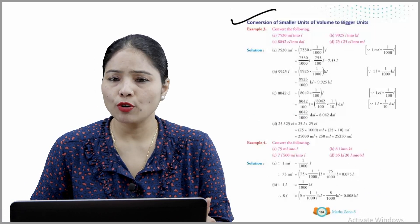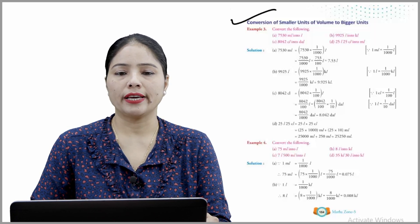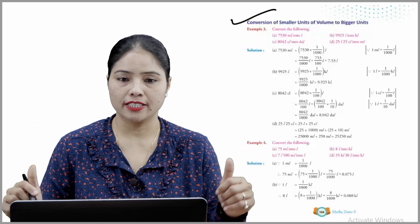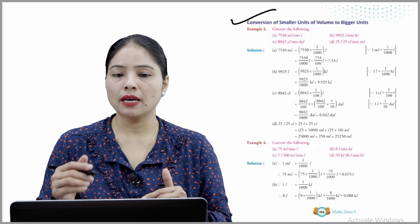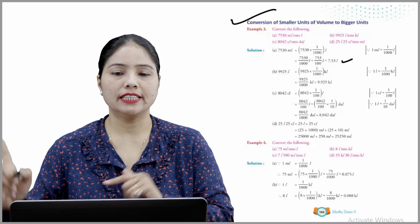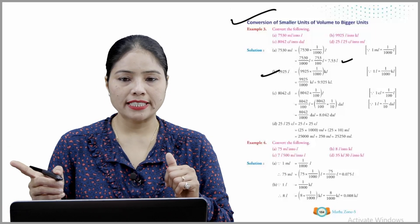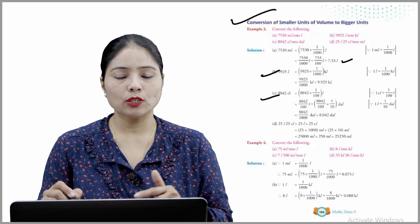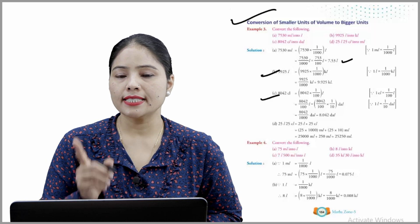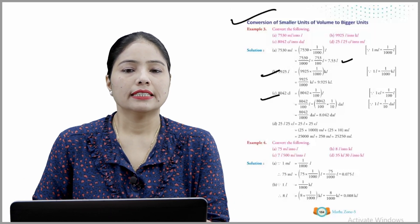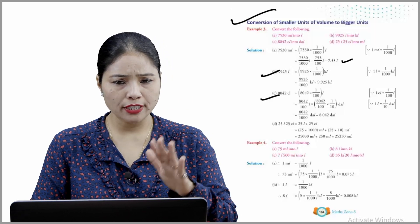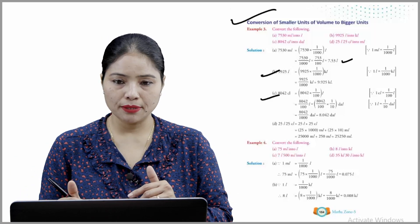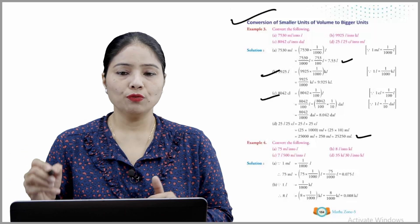Conversion of smaller units of volume to bigger units. Example 3 — convert the following. 7530 mL into litres: divide by 1000, answer = 7.53 L. 9925 mL ÷ 1000 = 9.925 KL. 8042 CL ÷ 100 = 80.42 litres. 25 L 25 CL: 25 × 1000 = 25,000 mL, plus 25 × 10 = 250 mL. Total = 25,250 mL.